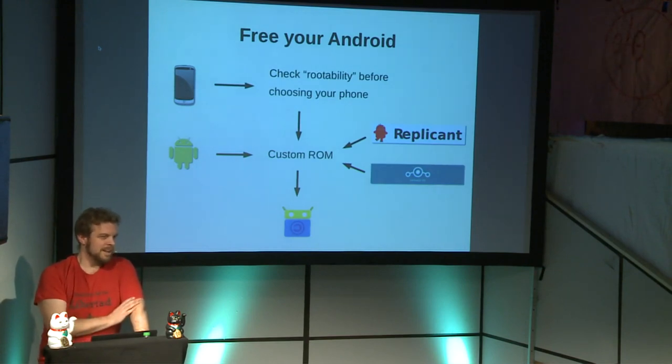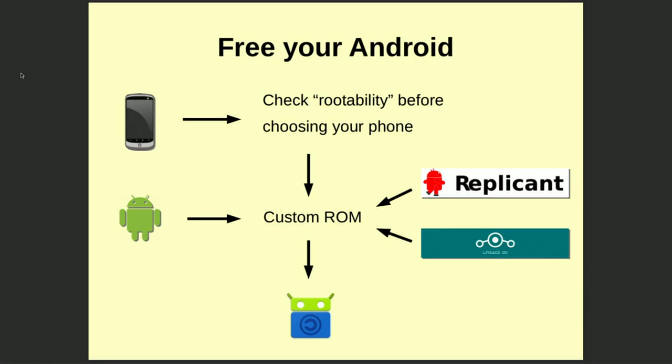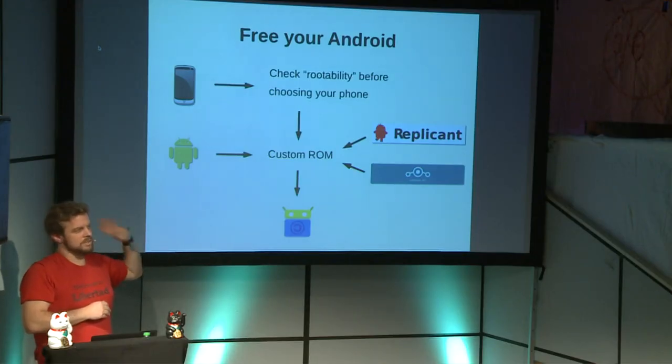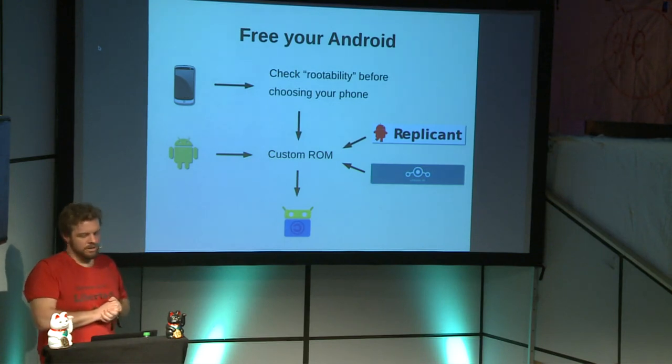The solution — in short, though it's a very complex and technical topic — is that you can root your phone, and afterwards you can install an alternative operating system. These are basically called custom ROMs. Because the Android system is free software, there are forks out there that take the system, free it from the Google apps, and republish it as you're used to with free software. You can get these custom ROMs and install them on your phone.